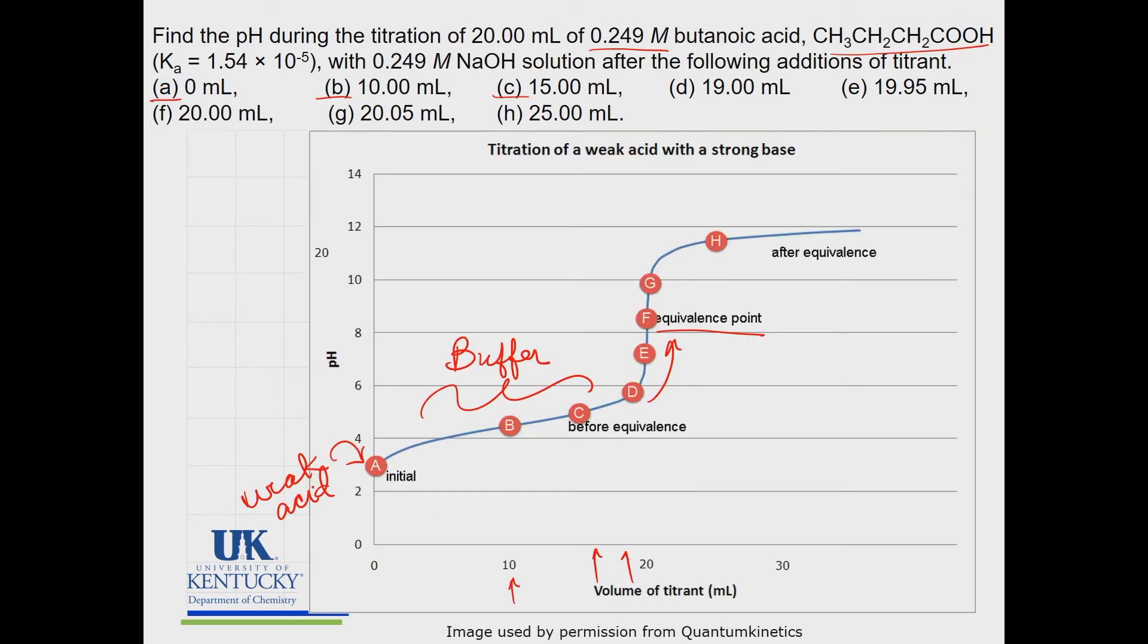Right here at 20 milliliters - since the molarity of the base and the molarity of the acid are exactly the same - you reach the equivalence point when the volumes of the acid and the volume of the base are exactly the same.